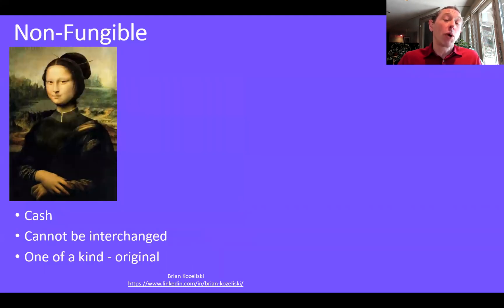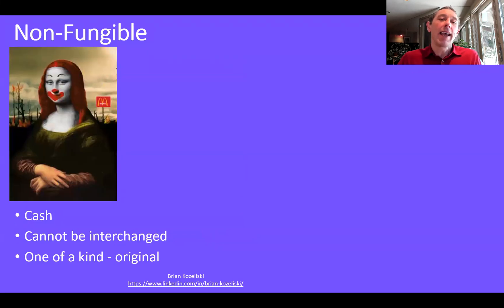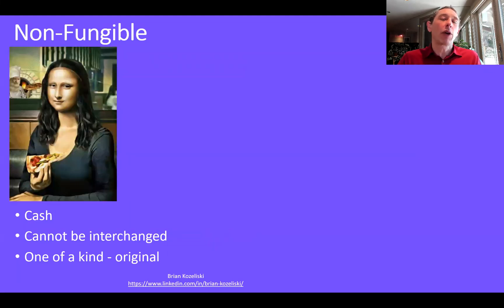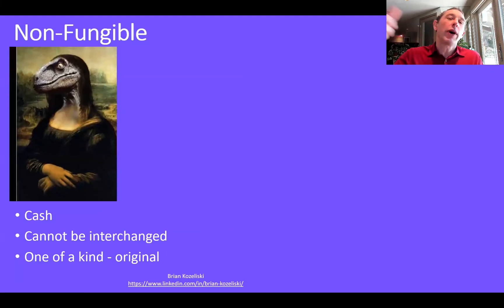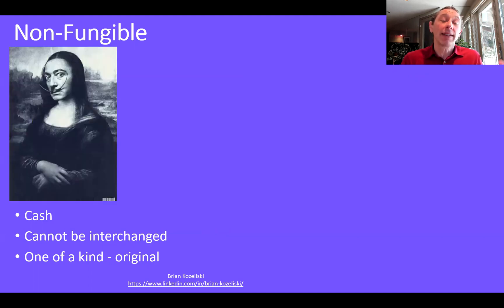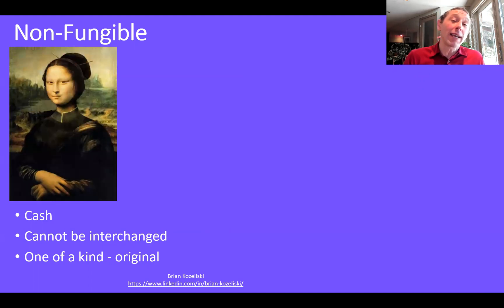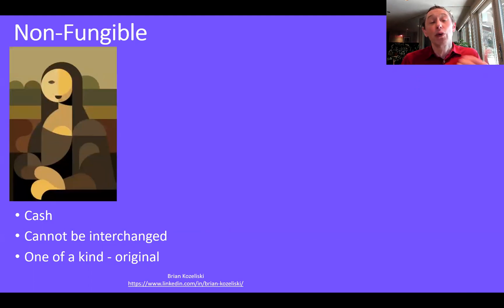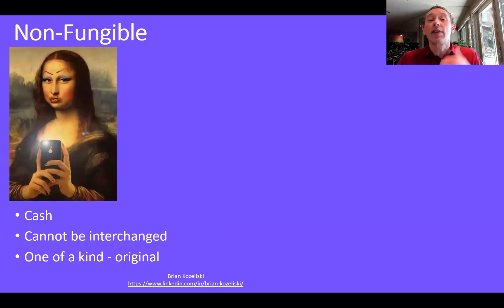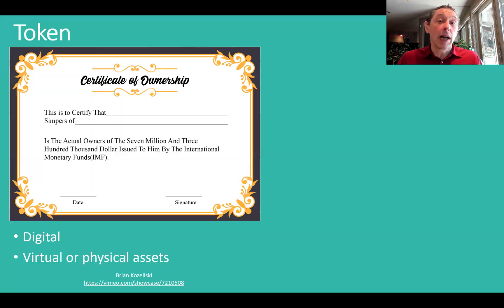Let's start with the word 'fungible.' Cash is a fungible asset. If I had two $5 bills and you had a $10 bill, we could exchange those and feel like we had the same asset. On the other hand, a non-fungible asset is something that is truly unique, something that's original, something that's one of a kind.